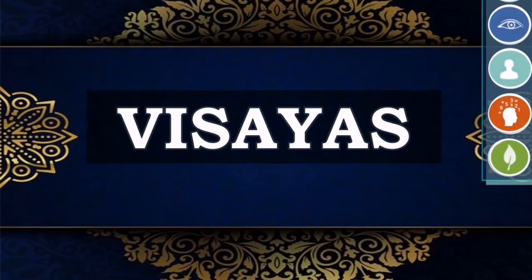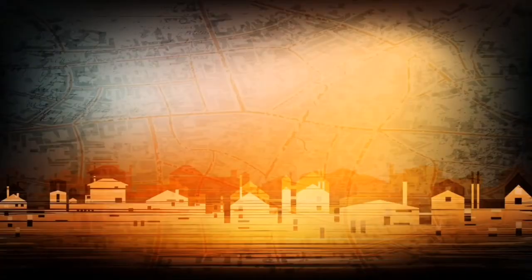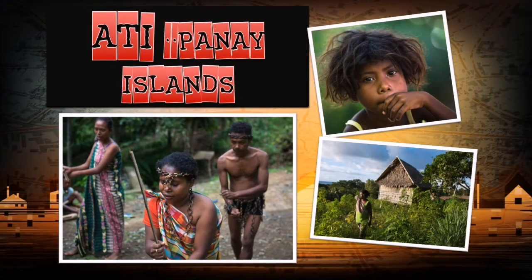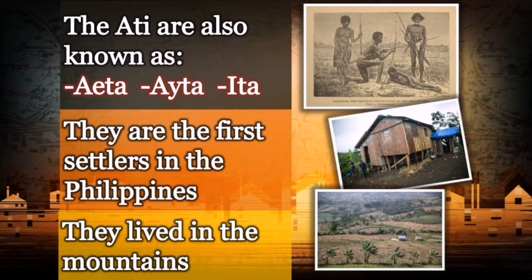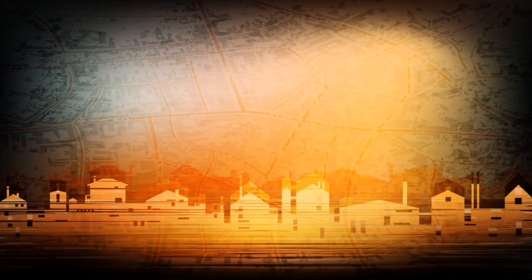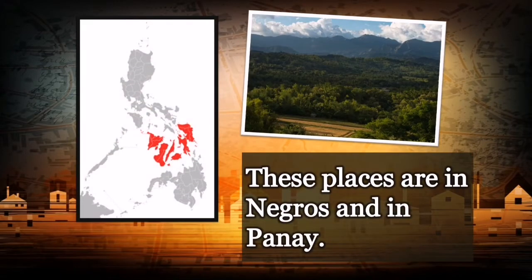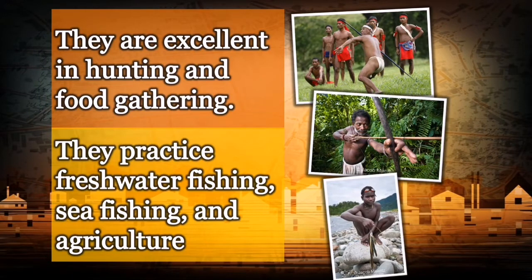Let's go now to Visayas. The scattered islands of Visayas is home to the cultural communities of the Atis, an ethnic group in this part of the country. The Atis of Panay Islands are also known as Aita or Ita. They are the first settlers in the Philippines and usually live in the mountains, in places in Negros and Panay. They are excellent in hunting and food gathering, and practice freshwater fishing, sea fishing, and agriculture.